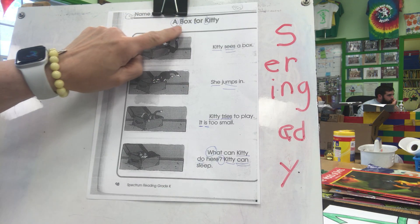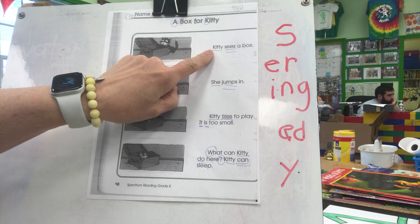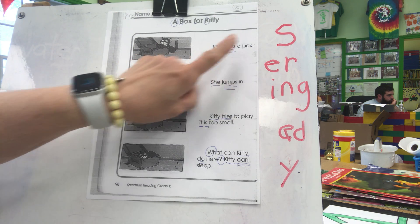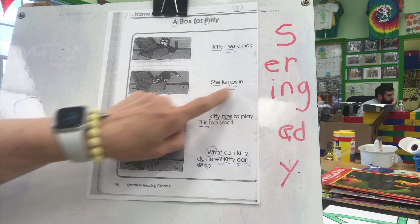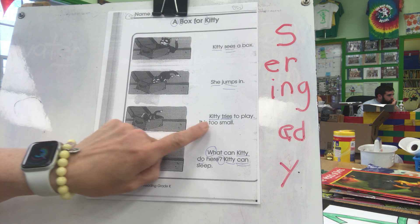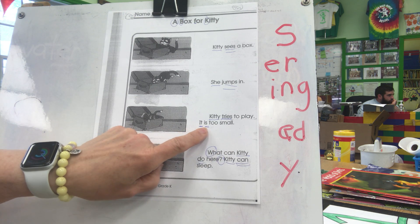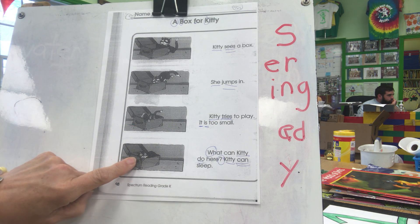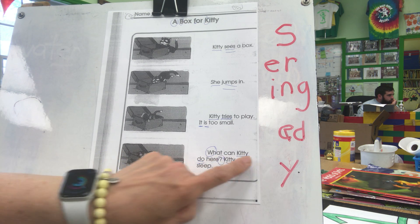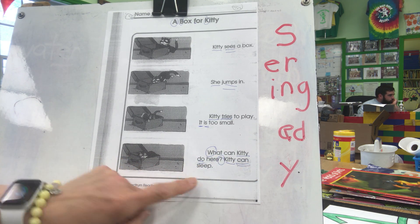Our title is A Box for Kitty. First picture: Kitty sees a box. Second picture: She jumps in. Third picture: Kitty tries to play. It is too small. Next picture: What can Kitty do here? Kitty can sleep. They answered the question themselves.